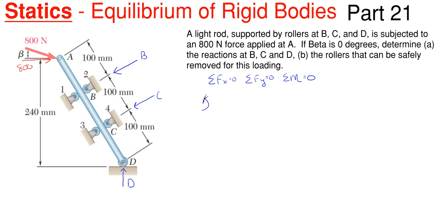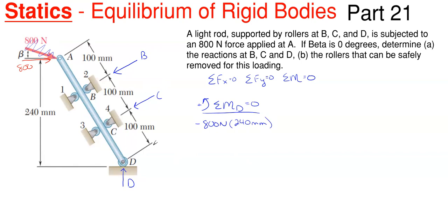First, I'm going to sum moments about point D equal to zero. This gives me an equation in terms of B and C as my unknowns. The 800 newtons is purely horizontal, so its perpendicular distance to D is 240 millimeters, and it rotates clockwise — so minus 800 newtons times 240 millimeters. B and C have perpendicular distances to D of 200 and 100 millimeters respectively, and both rotate counterclockwise, so they're positive: plus B times 200mm plus C times 100mm equals zero.